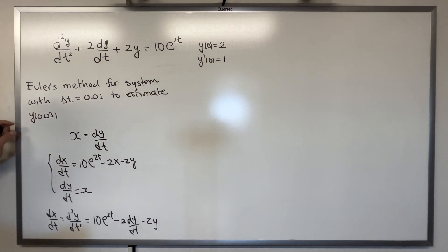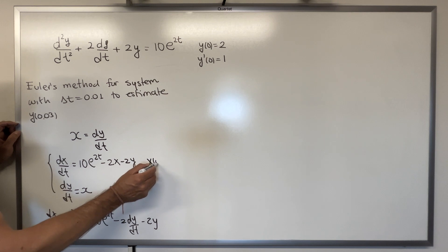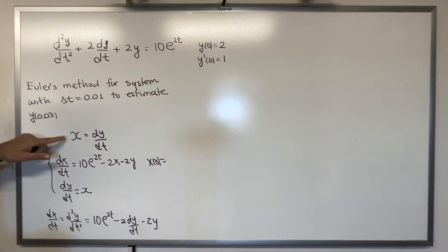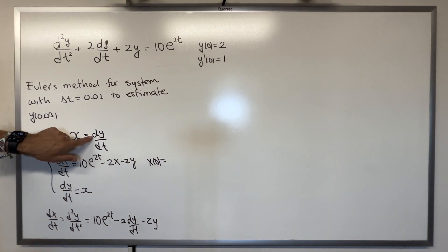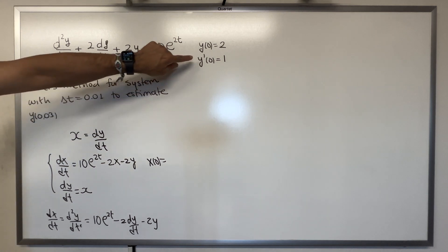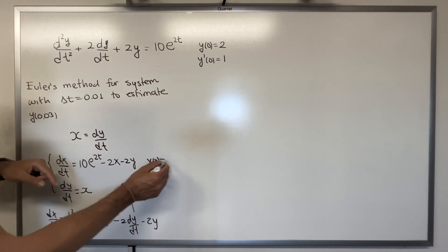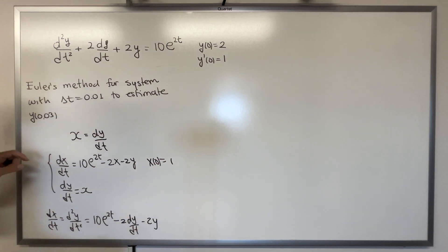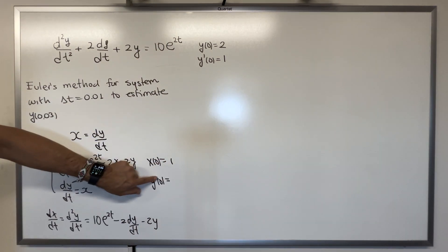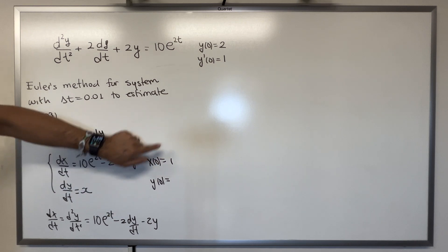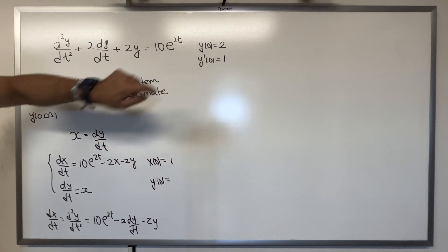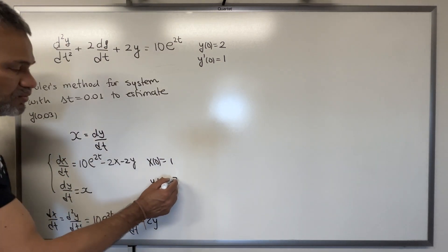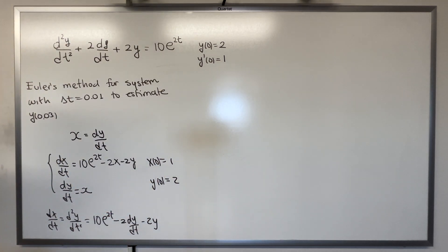Now, what are the initial conditions? x(0) is dy/dt evaluated at 0, which is y′(0) = 1, and y(0) = 2. So we have our initial conditions.